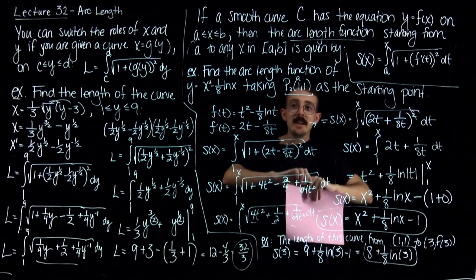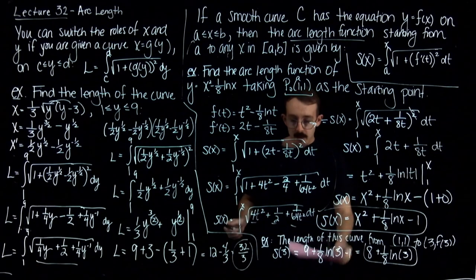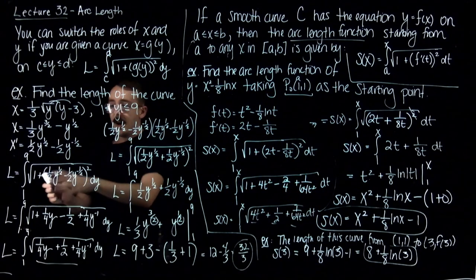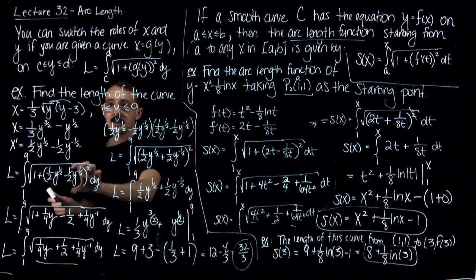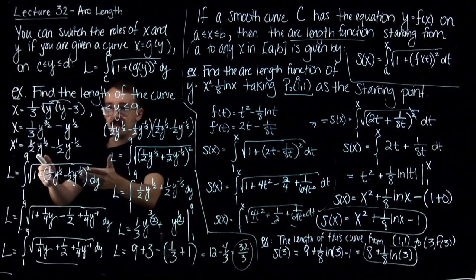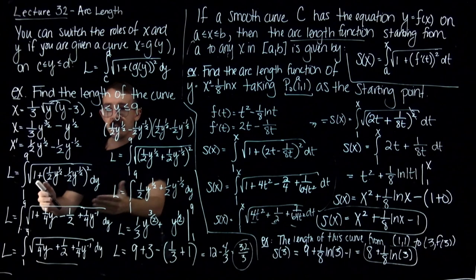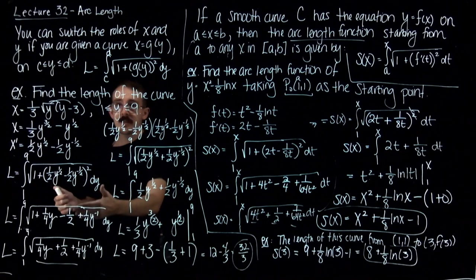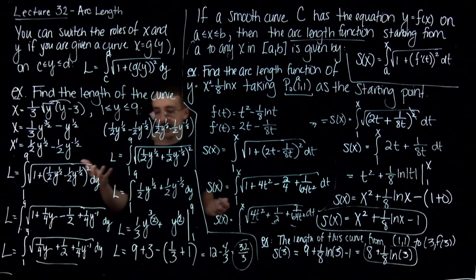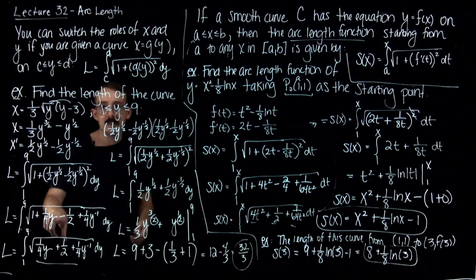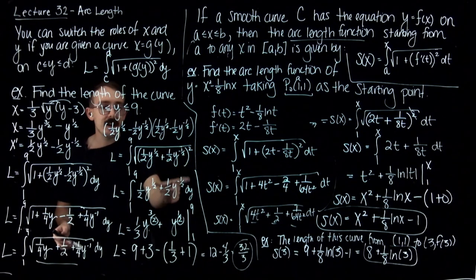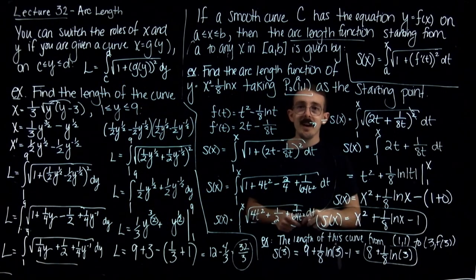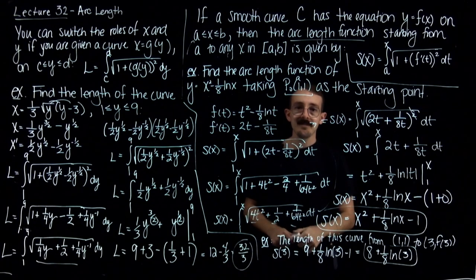I encourage you to try many different examples of arc length. The difficult part always comes after plugging everything into the radical — you'll need to practice simplifying that expression enough to integrate it. The most common trick is turning the expression into a perfect square so that the square cancels with the radical, leaving something nice to integrate. Please reach out if you have any questions, and have a nice day!